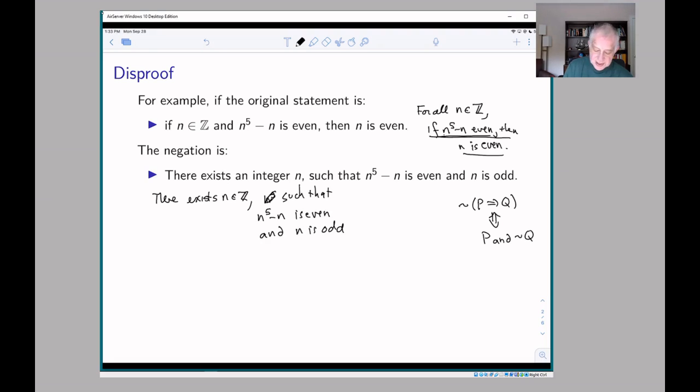That's where this statement came from. This statement came from taking this if then statement, if P then Q, and taking its negation which is P and not Q. And of course, not of n is even is that n is odd.